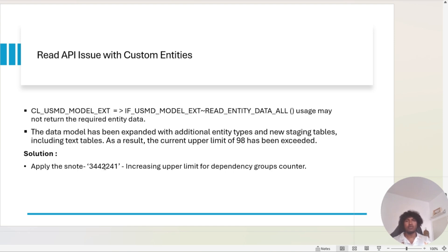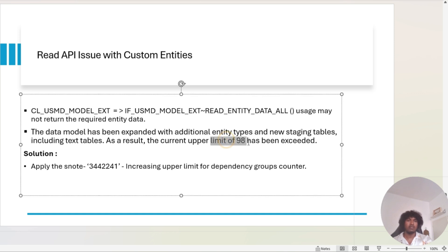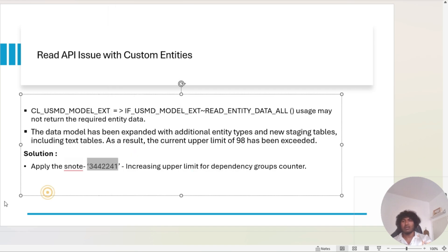The next issue is with the read API for custom entities. We used this API to read all data of entities in a custom derivation BAdI, but for certain custom entities it did not return the value properly. We identified there is a threshold for reading the tables — in our case we had many custom entities, reaching more than 98. We applied the corresponding SAP note to fix it and it started working.